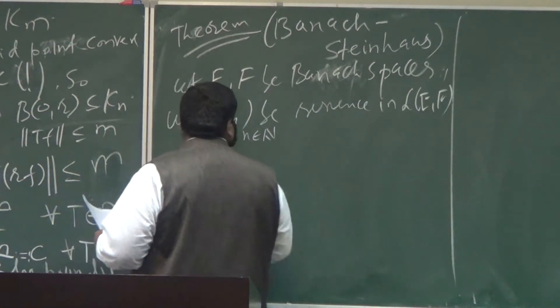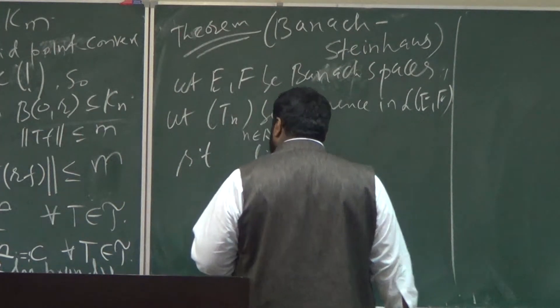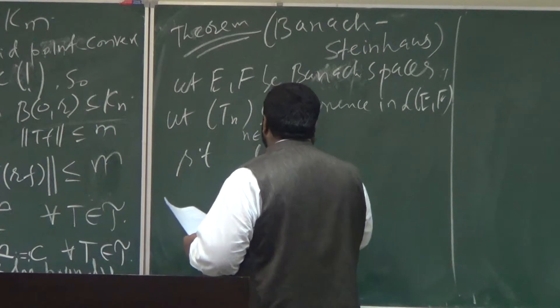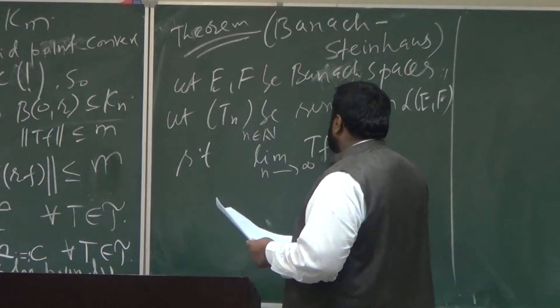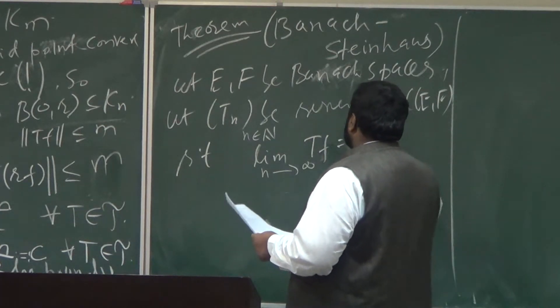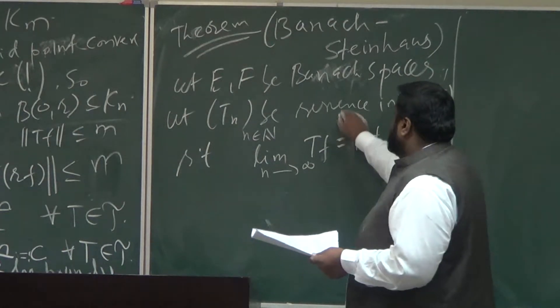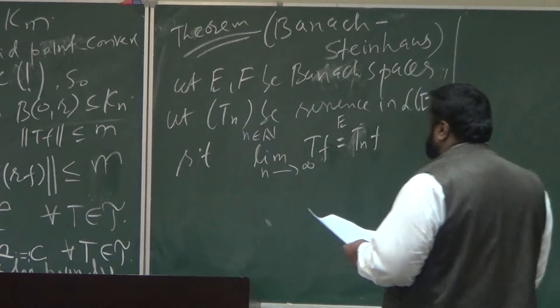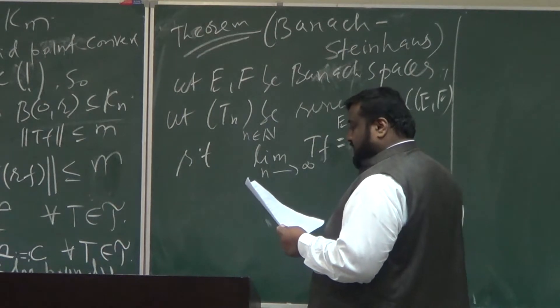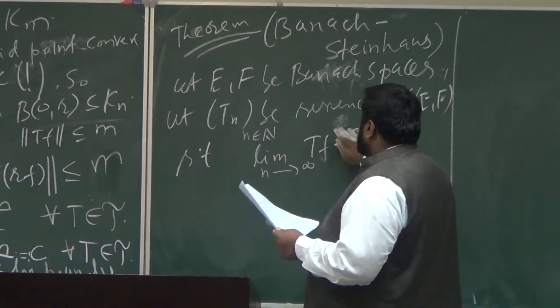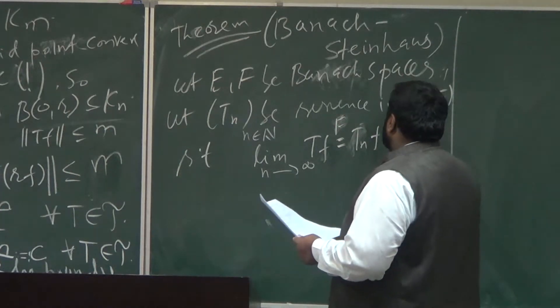Such that it converges strongly, and F is Banach, then Tn of Fn converges to T of Fn for all Fn in E.